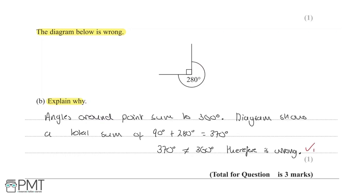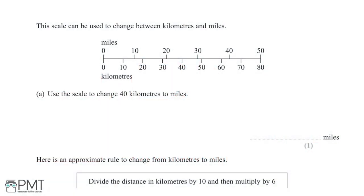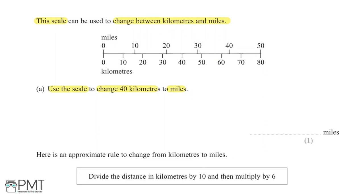A scale is used to convert between kilometres and miles. We are asked to use it to change 40 kilometres to miles for one mark. Looking at where 40 kilometres corresponds on the bottom axis, it falls approximately between 20 and 30 miles — around 25 miles. You get one mark for any answer between 24 and 26.